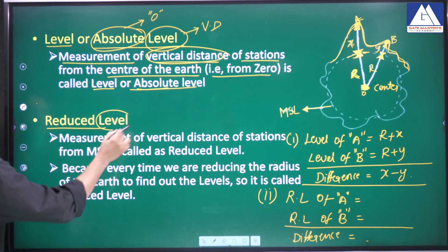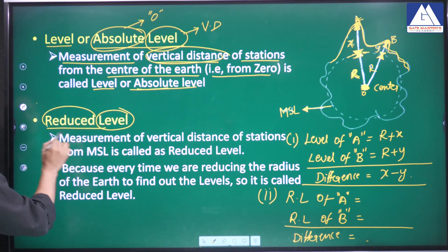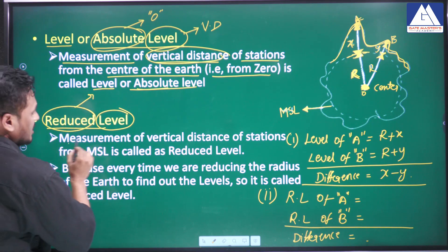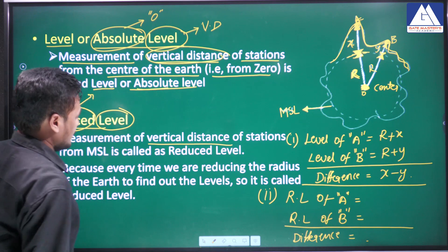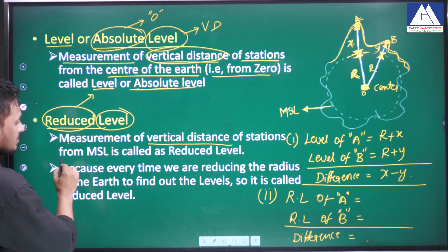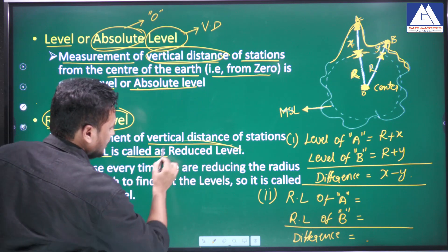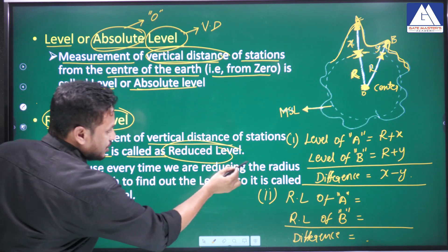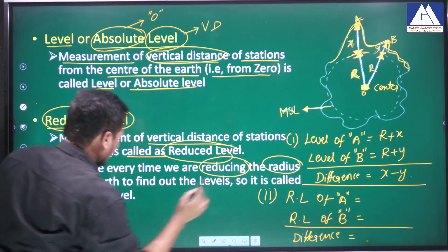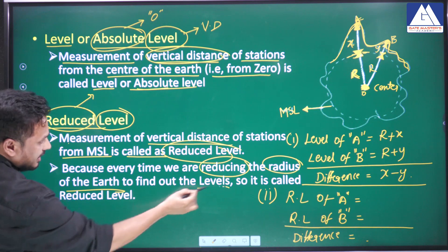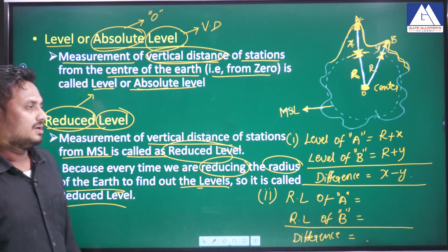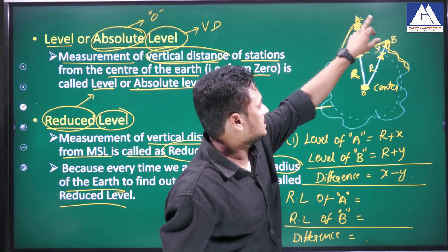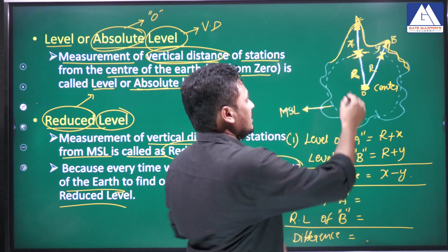Next is reduced level. Level is the same, but one more parameter is added — that is 'reduced.' Reduced level is nothing but the measurement of the vertical distance of the stations from the mean sea level. Every time we are reducing the radius of the earth to find the level, so it is called reduced level — measurement of the vertical distance of stations A and B from the mean sea level.